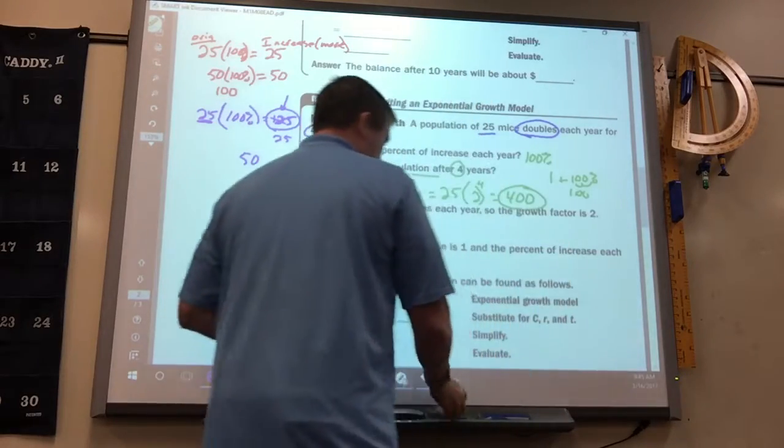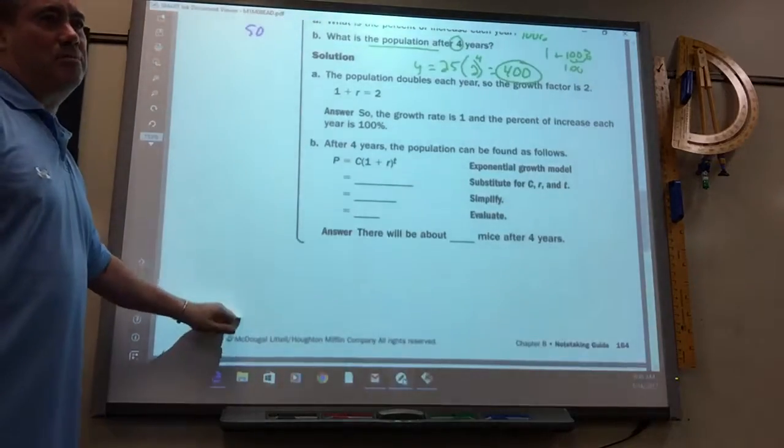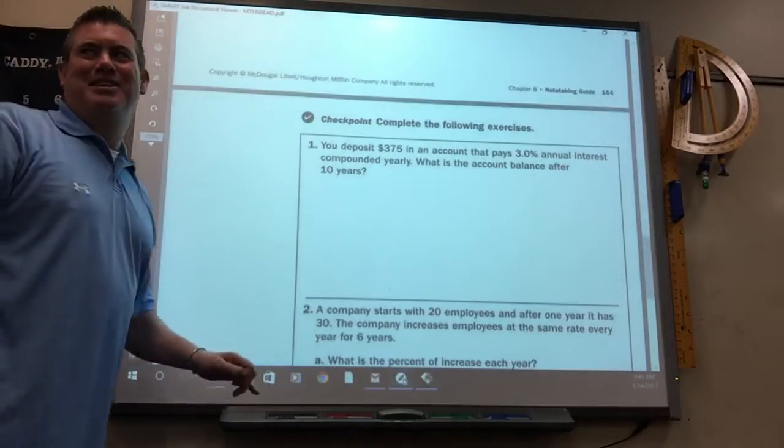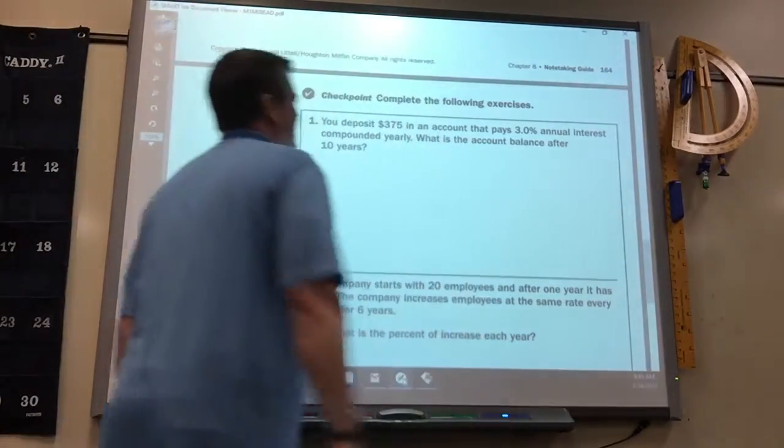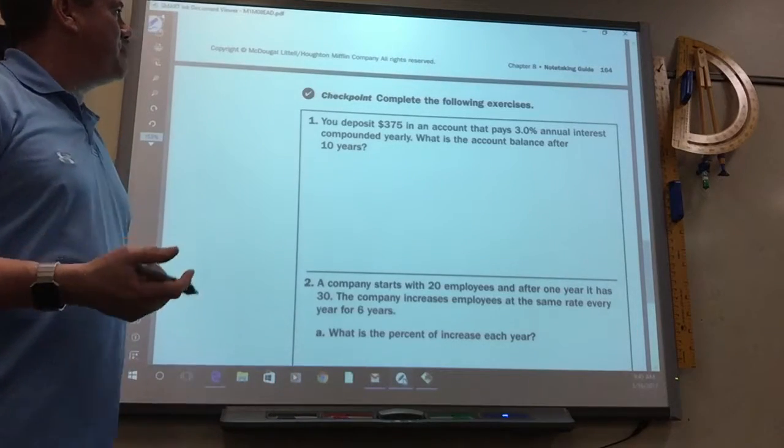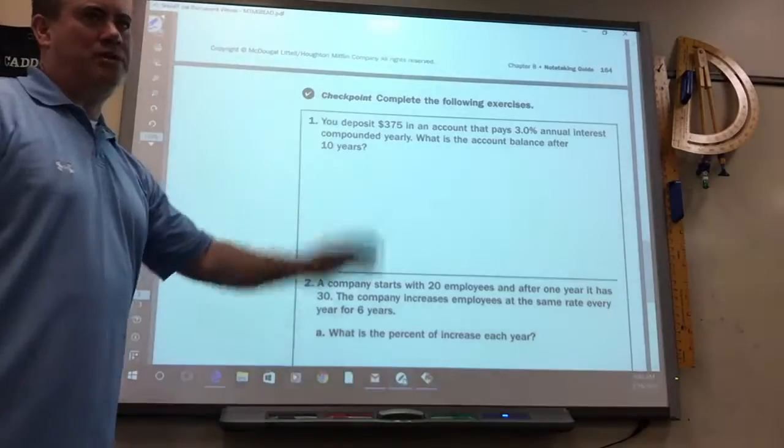That's a lot of mice. After four years, yep. So here's the problems we've got. We've got some money ones, and then the exponential problems that increase. So, you need to know the formula.